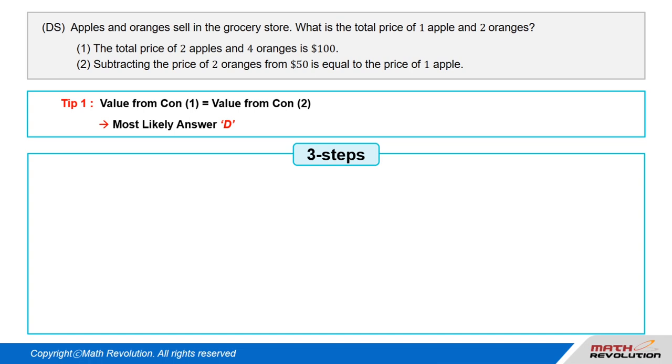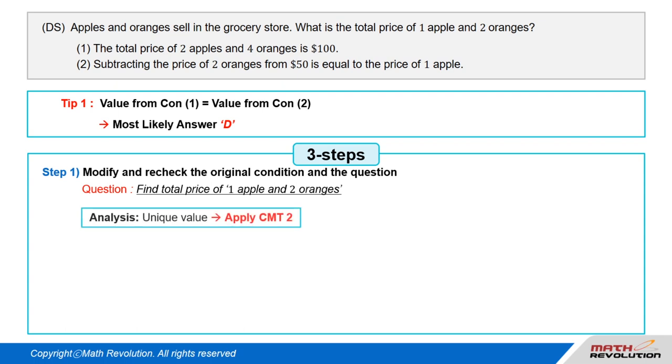Let's apply the three steps suggested previously. Follow the first step of the variable approach by modifying and rechecking the original condition and the question. We have to find the total price of one apple and two oranges.